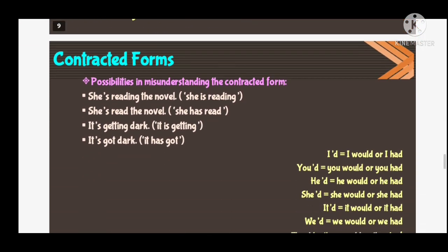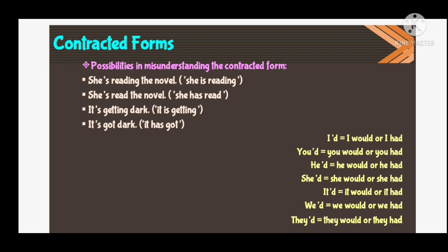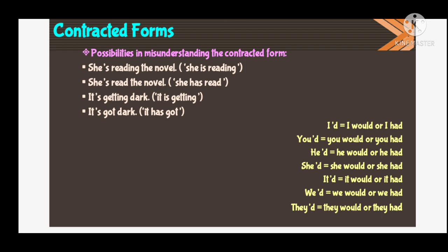Here is the side of contracted forms — that is, possibilities of misunderstanding contracted forms. 'She's reading the novel' means 'she is reading the novel'. 'She's read the novel' means 'she has read the novel'. So 'she's' can change meaning depending on context. Similarly, 'it's getting dark' and 'it's got dark' — the first means 'it is getting dark', the second means 'it has got dark'. Here we see how short forms can change depending on how we use them.